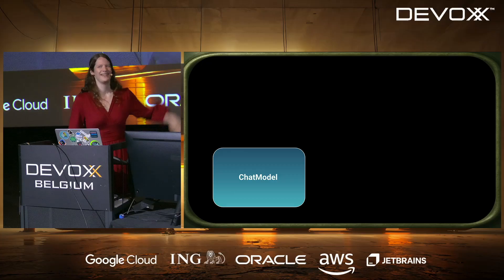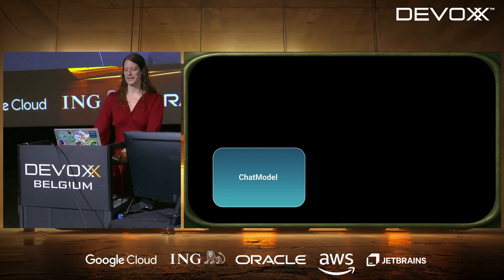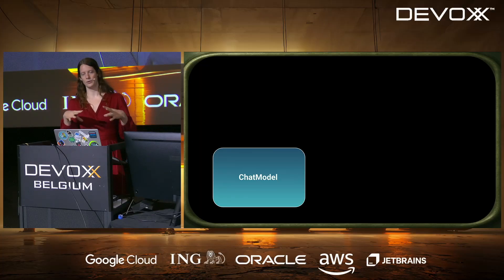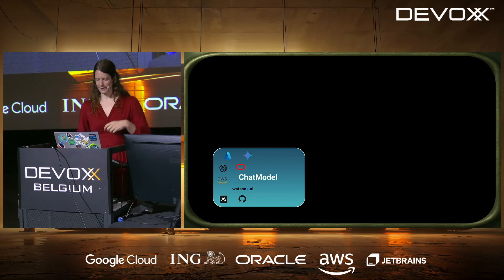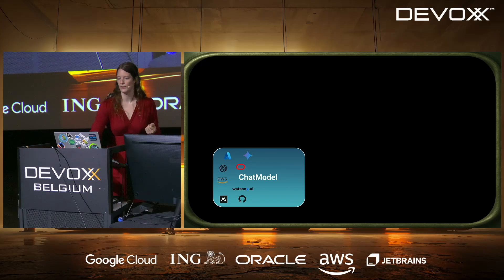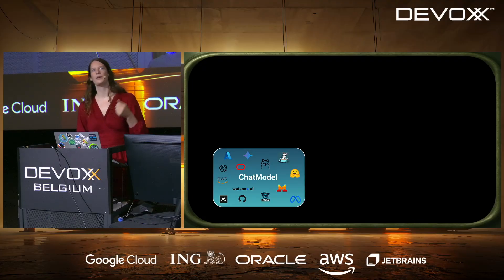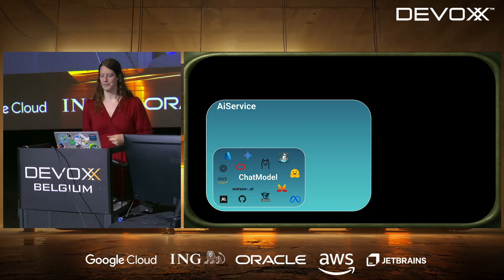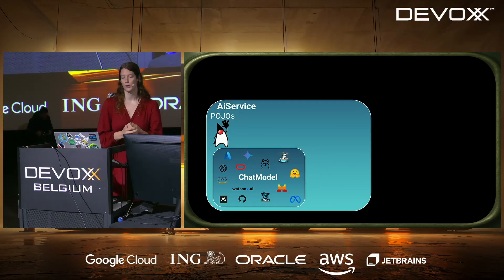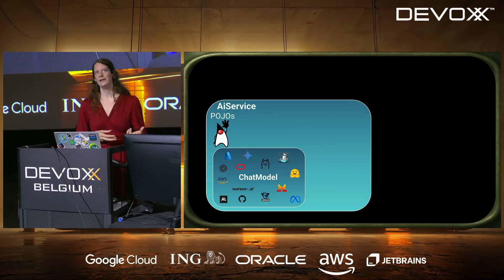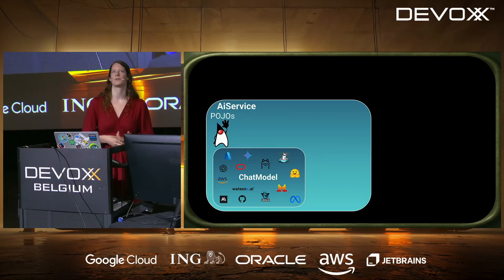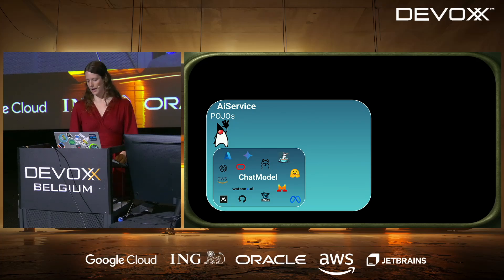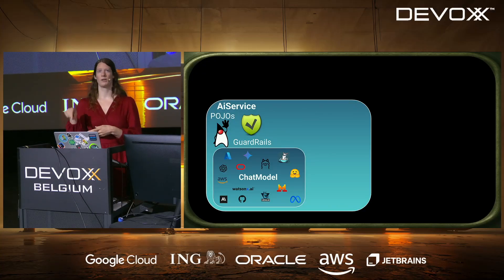LangChain4j is all about connecting to LLMs at its core — making that very easy and making it easy to swap models. We support all major commercial model suppliers as well as any local model you can run on your laptop or on-prem. Around that, LangChain4j comes with a thing called AI Service that provides tooling to work with these verbose, non-deterministic LLMs. We support structured I/O — sending Java objects in and getting Java objects out — plus guardrails for checking what goes in and what comes out.